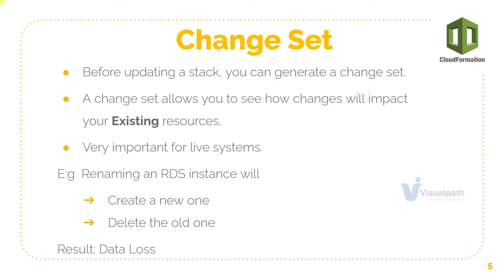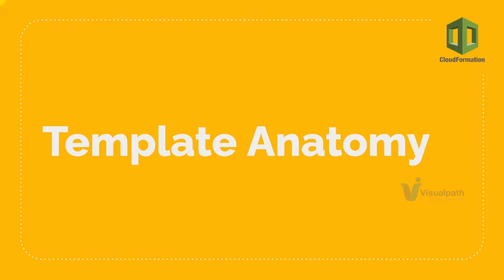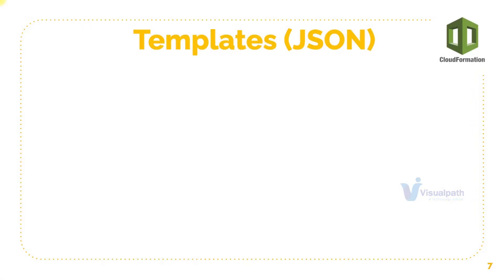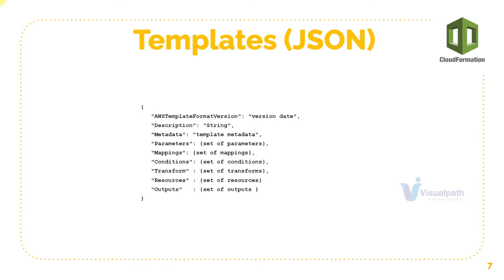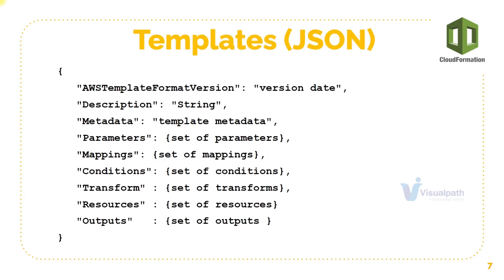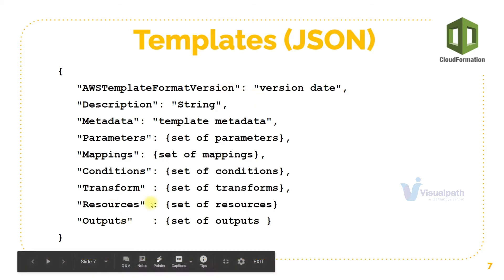Now let's understand the template anatomy. That's everything really of CloudFormation — you really need to learn the template. It supports both JSON and YAML. First thing you have is the AWS template format version. This is optional, not mandatory. All sections are optional except Resources — Resources is the only mandatory section in your template.